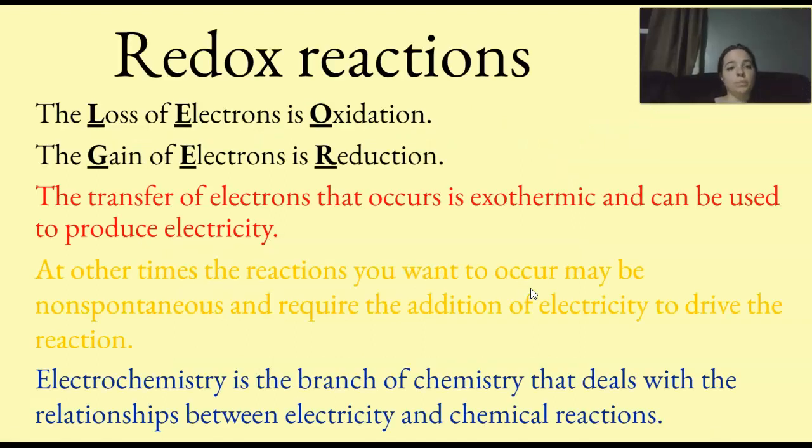So again, loss of electrons is oxidation, LEO. Gain of electrons, reduction, GER. LEO goes GER. The transfer of electrons that occurs is exothermic and can be used to produce electricity. So exothermic is spontaneous, happens like that, on its own. You don't have to pressure anything into doing it.